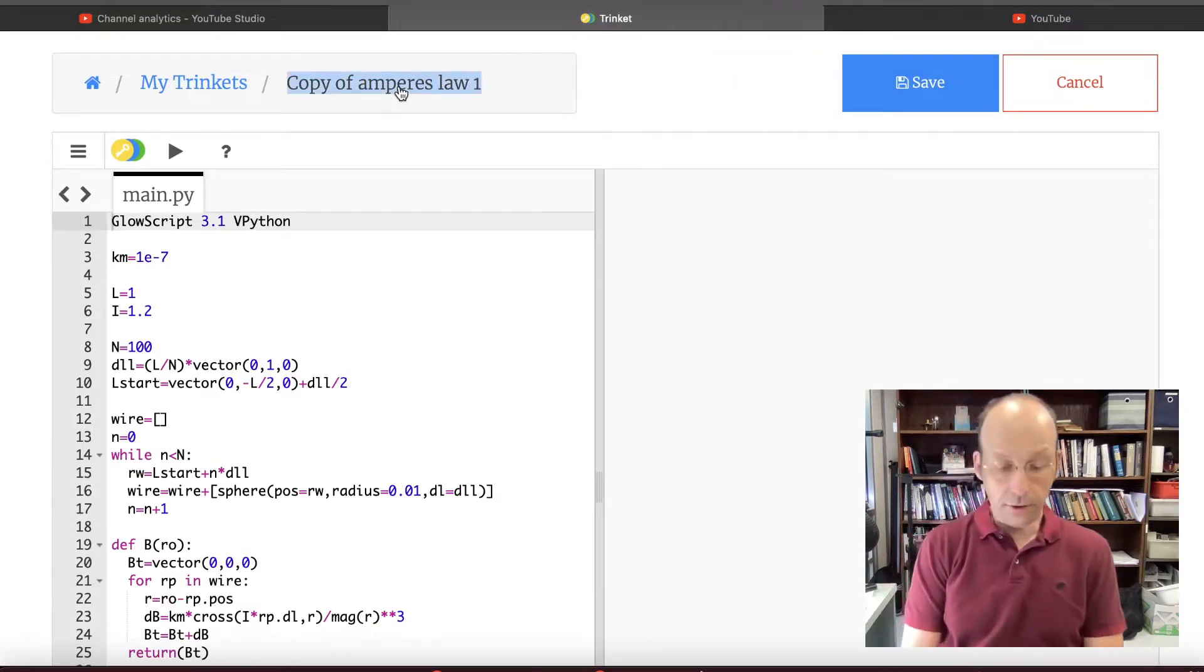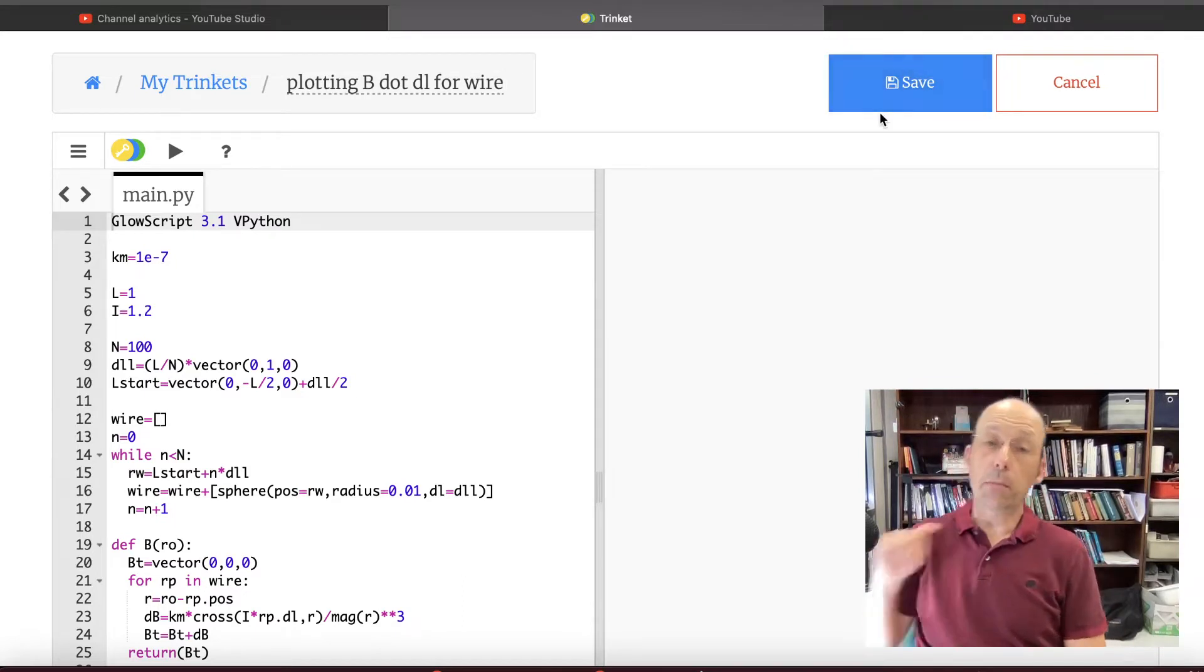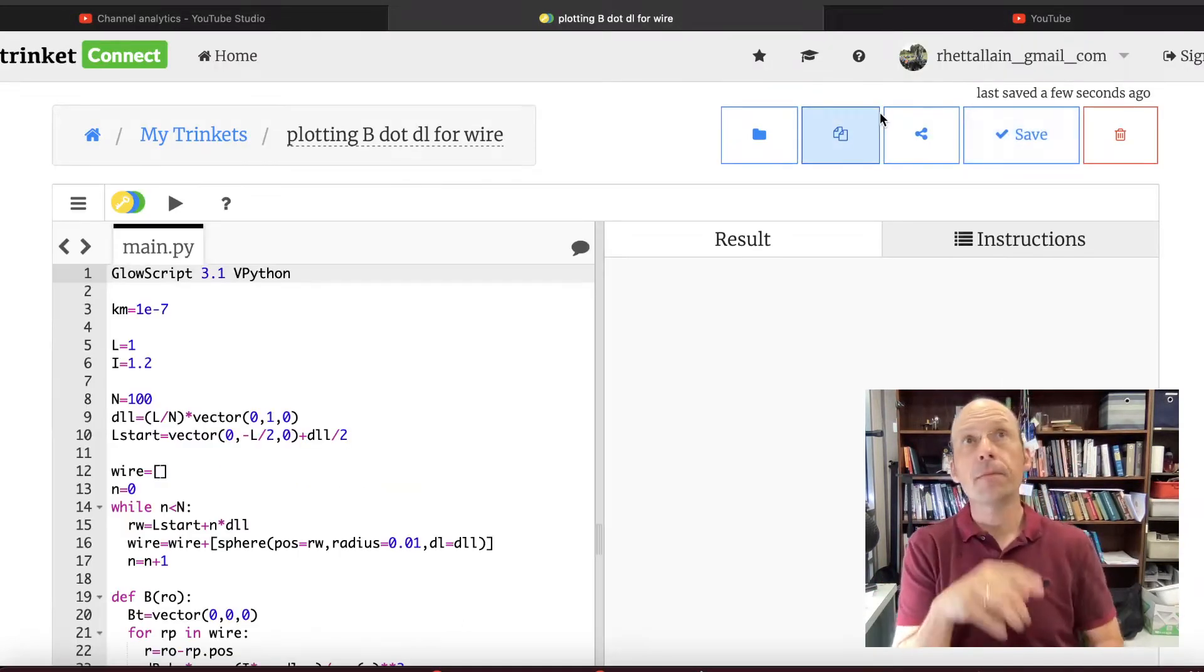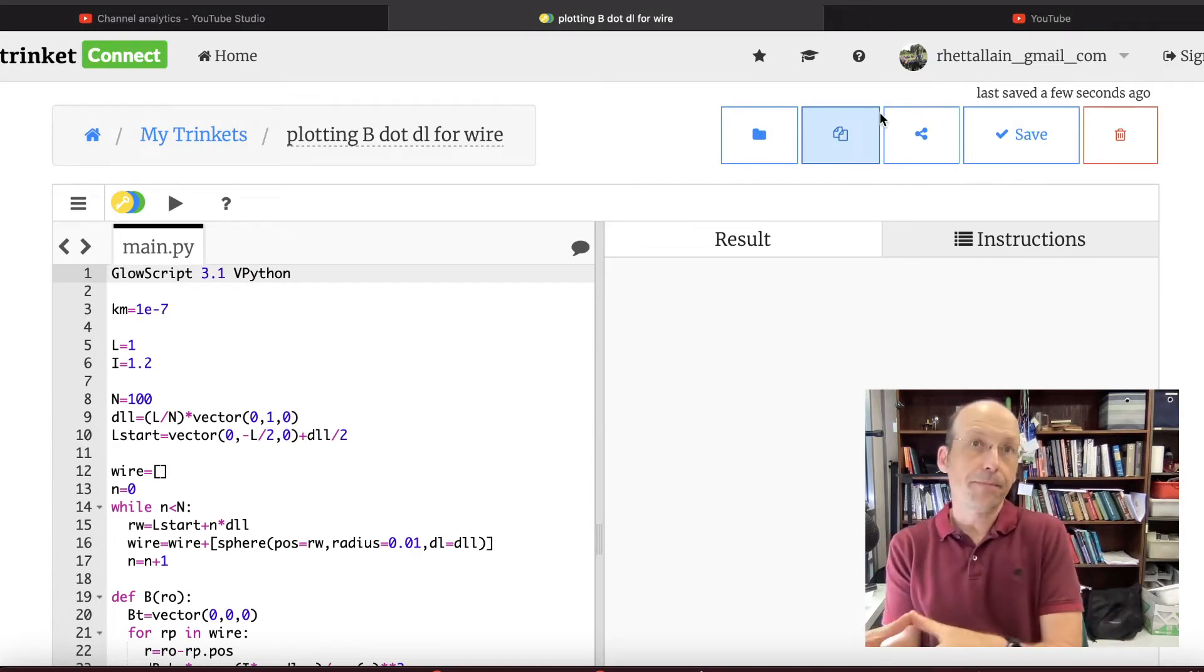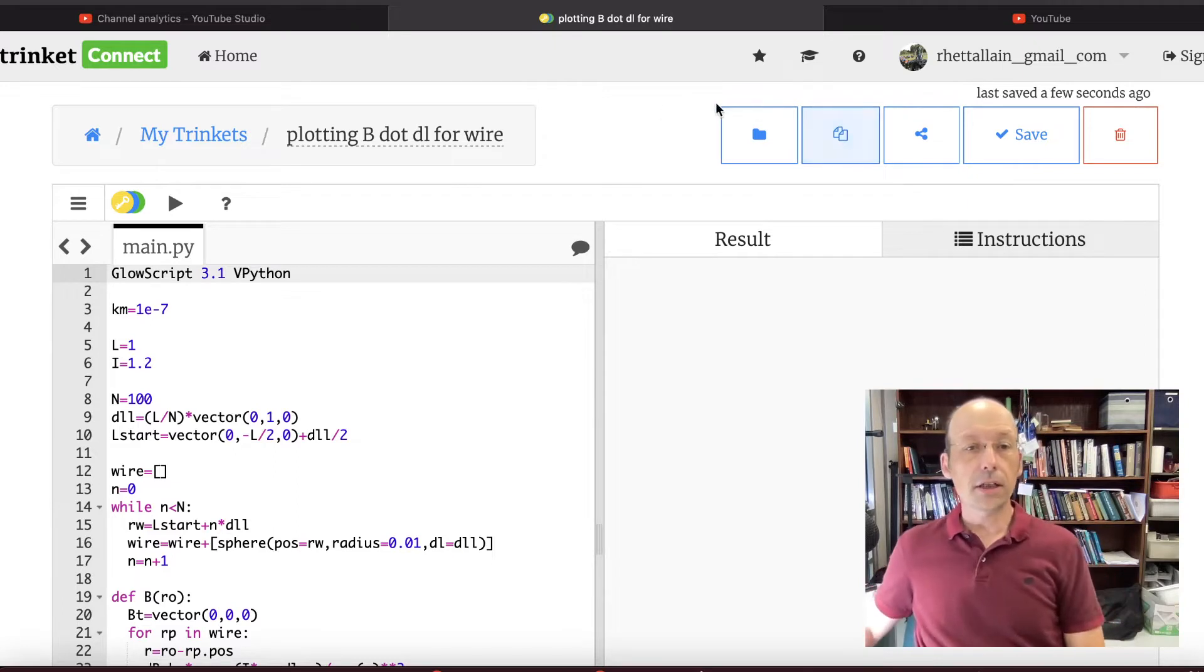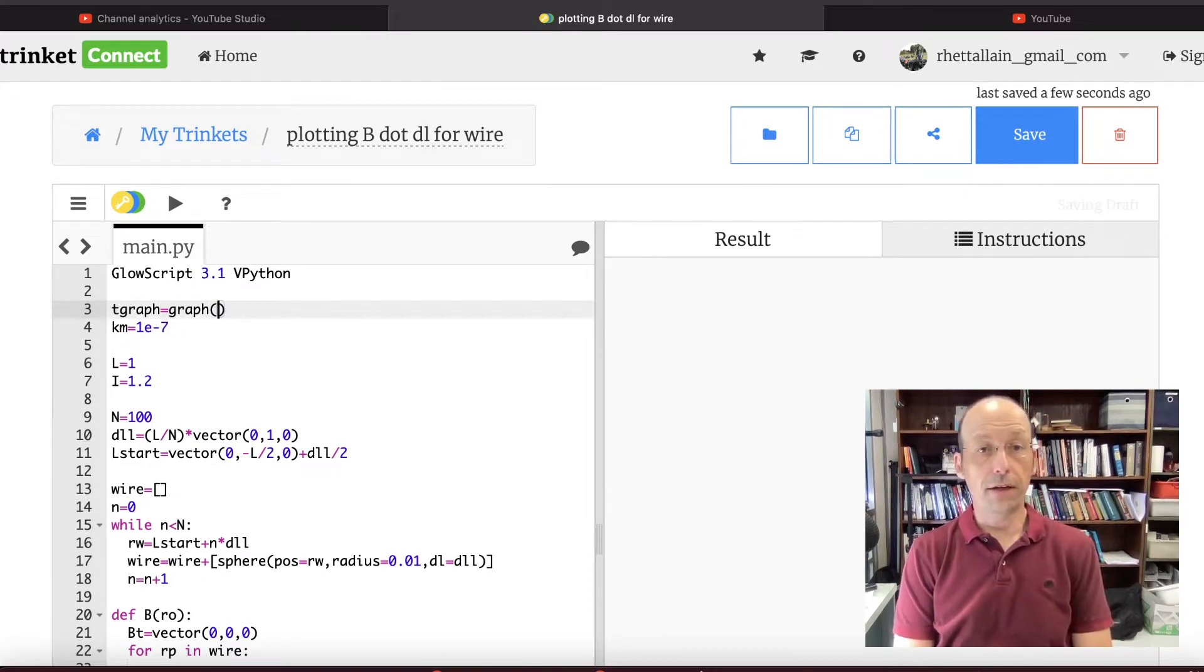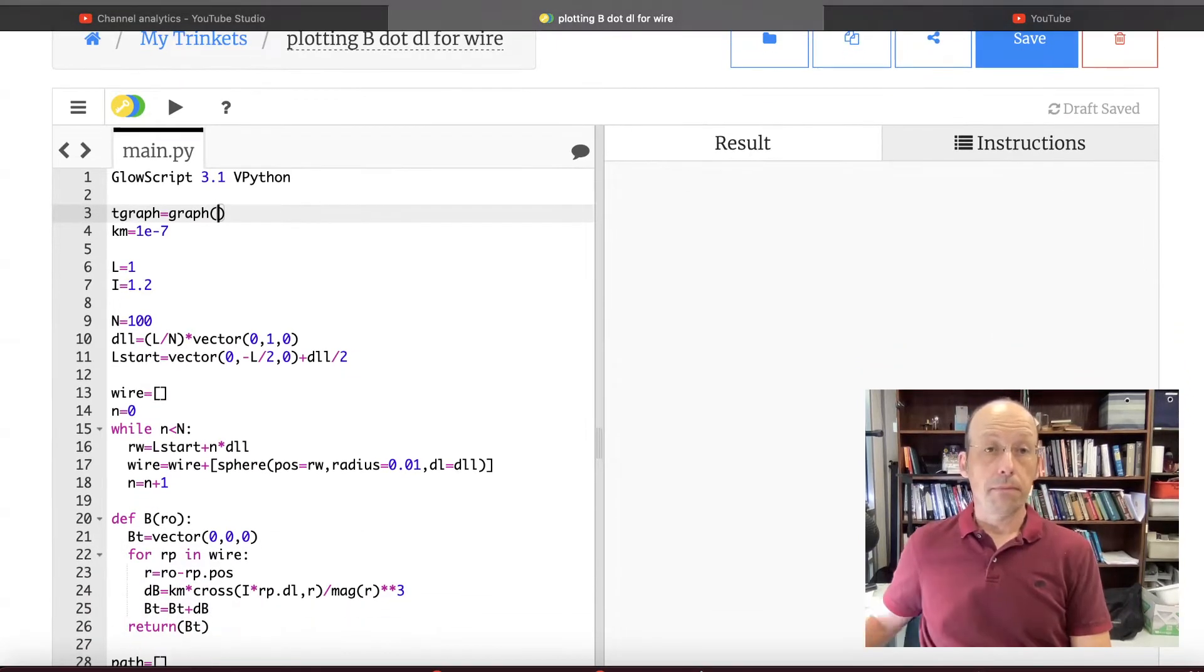And let's say I'm going to call this plotting B dot DL for wire. So I want to plot B dot DL as that go along that thing. And in particular, you know, what happens if my loop is not, I didn't even change the size. I could change the size of that loop too. But what if the current doesn't even pass through the loop? What would happen then? Okay, so let's make a graph. Let's start off with a graph. I'll just put it up here at the top. Graph equals graph. That's an object that's built into Python.